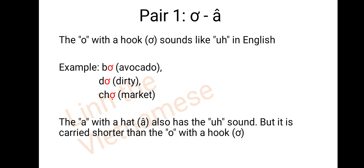Let's start with Pair 1: Ơ with a hook and Â with a head. The Ơ with a hook sounds like the 'A' sound in English. The Â with a head also has a similar sound, but it is carried shorter than the Ơ with a hook.